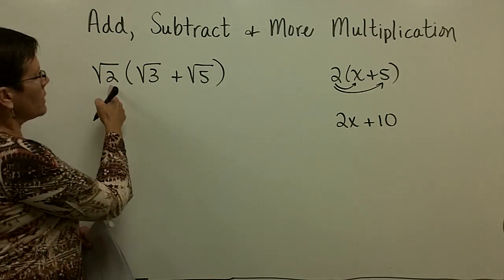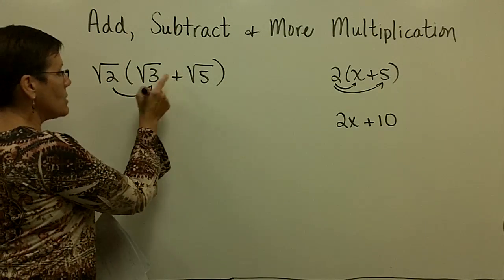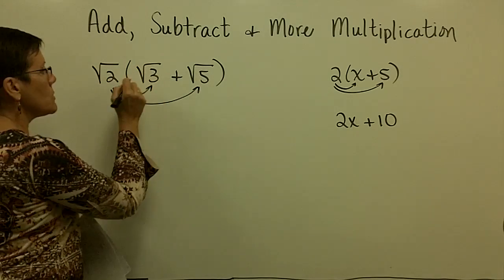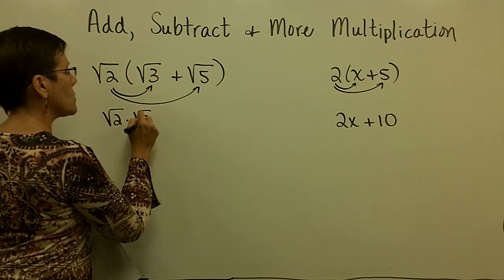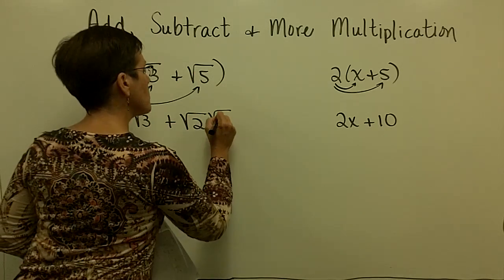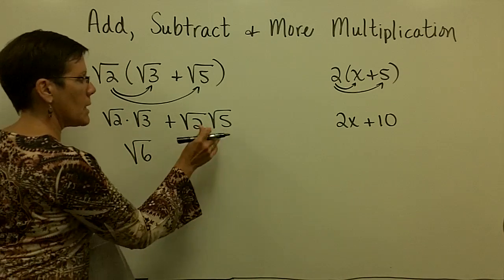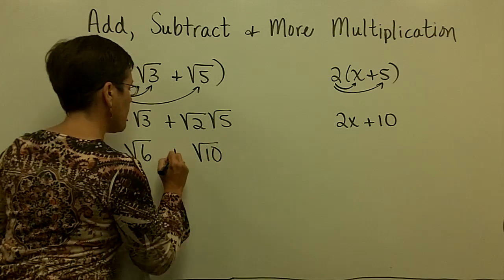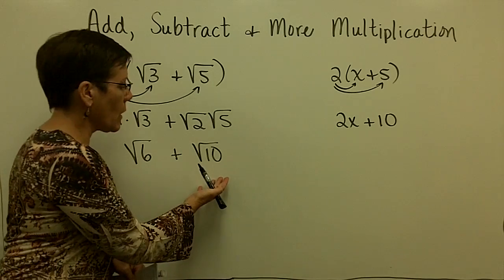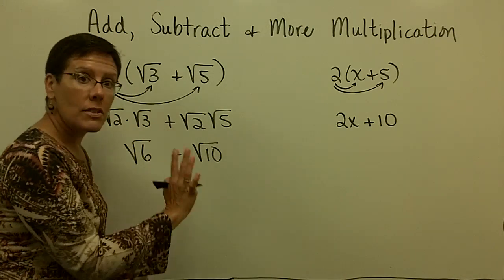When you do that with radicals — when you take a monomial times a binomial — you have to take the square root of 2 times the square root of 3, and then add to it the square root of 2 times the square root of 5. So: square root of 2 times square root of 3, plus square root of 2 times square root of 5. The product rule for radicals lets me call this the square root of 6, and this the square root of 10. Neither can be reduced, and they cannot be added because they are not like terms. So I have to stop — I'm all done.